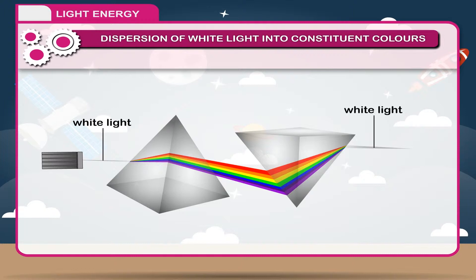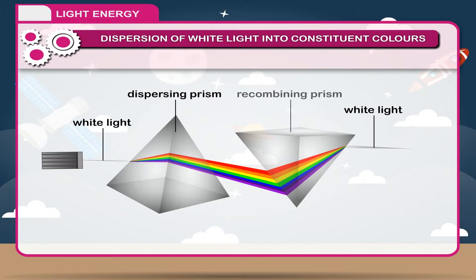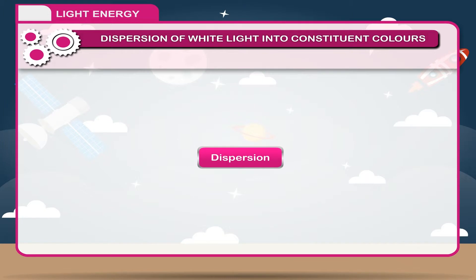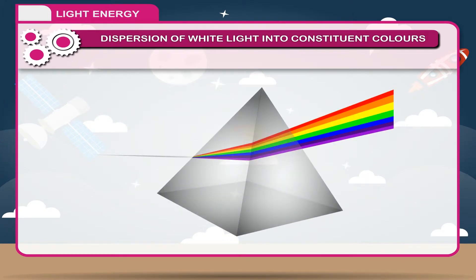The first prism is called the dispersing prism and the second one is called the recombining prism. The combination of the two prisms works as a rectangular block. The splitting of white light into its seven constituent colours while passing through a prism is called dispersion.